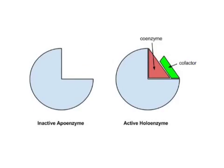Many enzymes are not active just by themselves — they need helpers, other molecules or ions that attach to the enzyme and help it bind substrate. Coenzymes are organic molecules that help enzymes function. Coenzymes often incorporate vitamins into their structure, like the B vitamins that make a part of various coenzymes involved in making ATP.